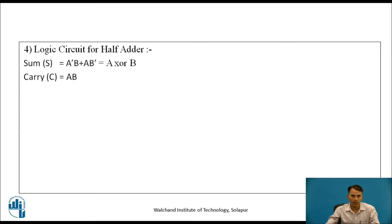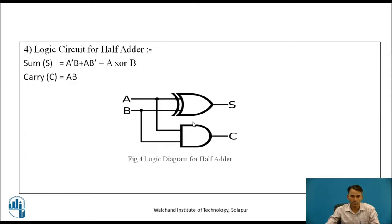In the next step, we are drawing the logic circuit for the half adder. Based on these two equations — sum S = A̅B + AB̅, which is nothing but XOR operation, written as A XOR B, and carry C = AB — we require two gates: XOR and an AND gate. This is the logic diagram for the half adder.